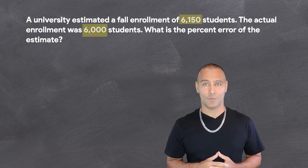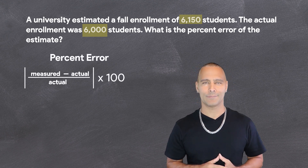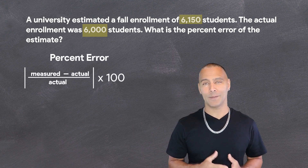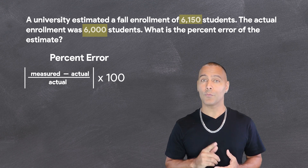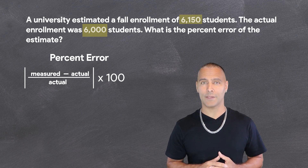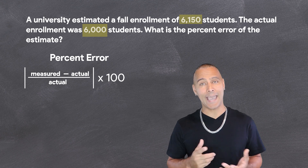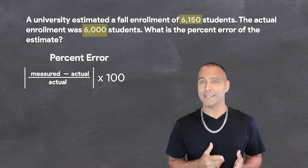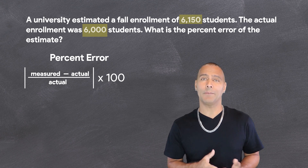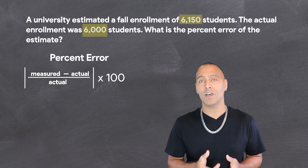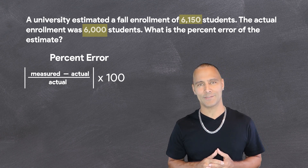To answer this, we are going to use the percent error formula. To calculate percent error, we subtract the actual value from the estimated value and divide the result by the actual value. Then we take the absolute value of that result and multiply by 100 to express the error as a percentage.